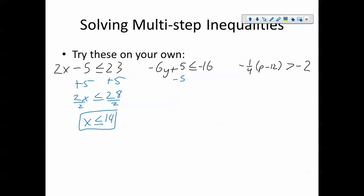Next problem, I'm subtracting 5 from both sides. That leaves me with negative 6y is less than or equal to negative 21. I'm going to do the opposite operation of negative 6 times y, which would be to divide by negative 6. So I'm dividing both sides by negative 6. The negative 6s cancel. That leaves me with y. I divided by a negative sign, so I'm going to remember to flip the inequality. And then I have 21 divided by 6.